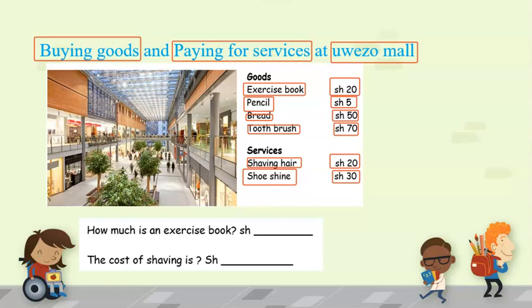How do we buy goods or pay for services? Whenever you are given money, you give the money to the shopkeeper and they will give you the commodity. For example, an exercise book costs 20 Kenya shillings, and the cost of shaving your hair is also 20 Kenya shillings. That's how we buy goods or pay for services.